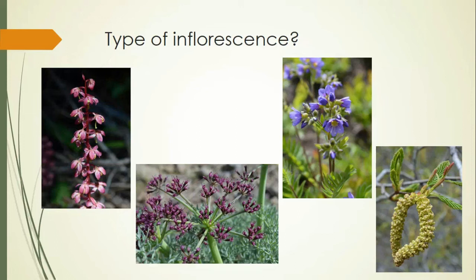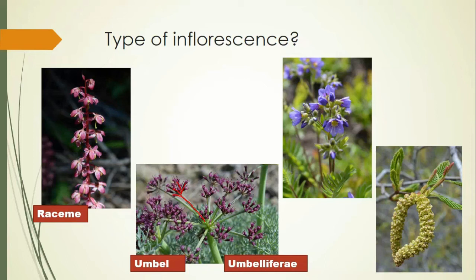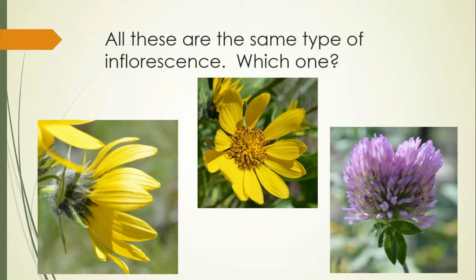Let's practice a few of these and look at examples. Can you tell me what type of inflorescence each of these are? This first one is a classic raceme — it's kind of a long spike but each flower has a pedicel. This next one is the umbel, actually a double umbel — a pedicel comes up here and then branches again into multiple flowers that each have an umbel-like arrangement. Umbels are really indicative of the family Umbelliferae, the old name — the new name is Apiaceae, which you might know as the carrot family. This Jacob's Ladder is a nice example of a panicle with branched pedicels. And this alder shows a catkin — this is a male one.